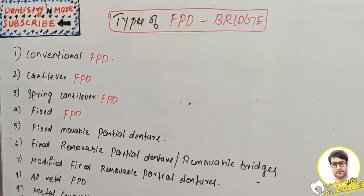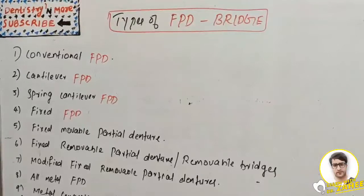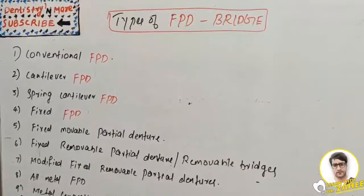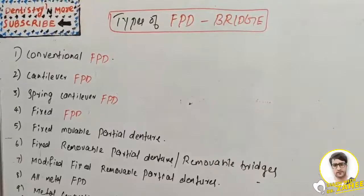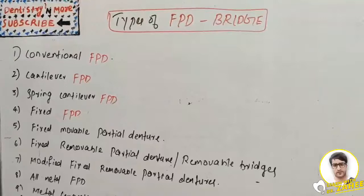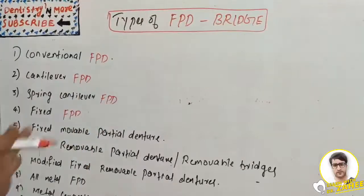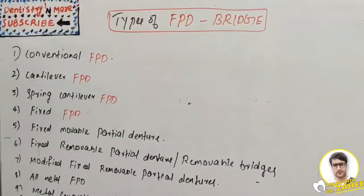Welcome back to another session in Dentistry and More. The topic for today is types of FPD in prosthodontics. FPD is also known as a bridge. As per definition, FPD is a partial denture that is cemented to natural teeth or roots, which furnish the primary support to the prosthesis — so it is fixed to the natural teeth or roots.